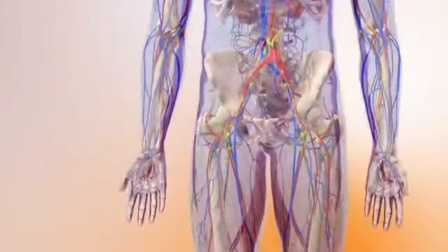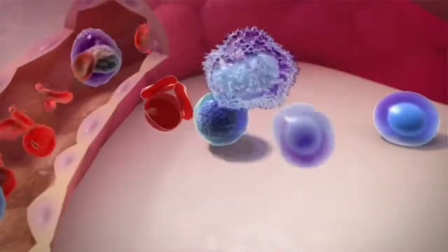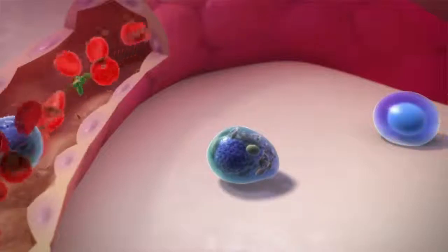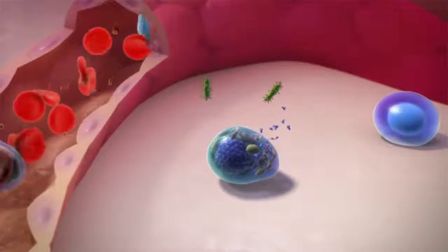AL amyloidosis is caused by a bone marrow disorder. The bone marrow produces blood cells, including plasma cells, a type of white blood cell that forms part of the immune system.